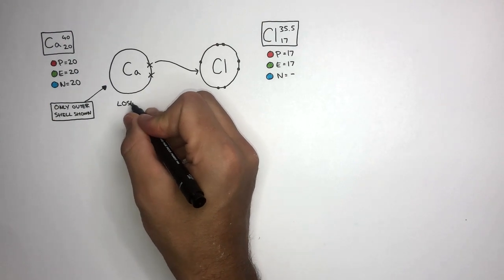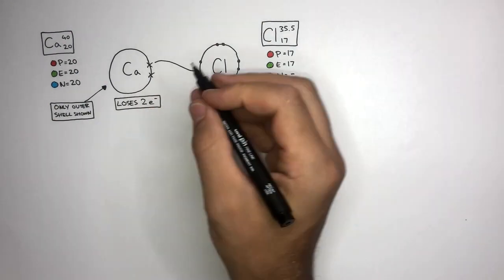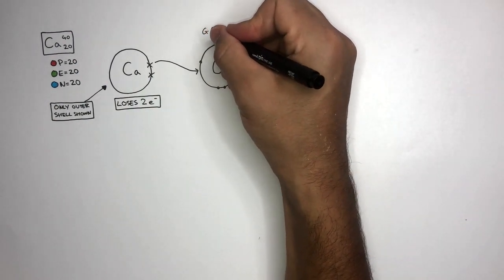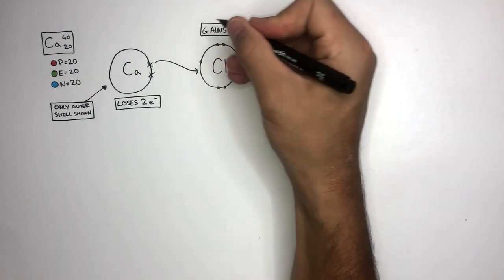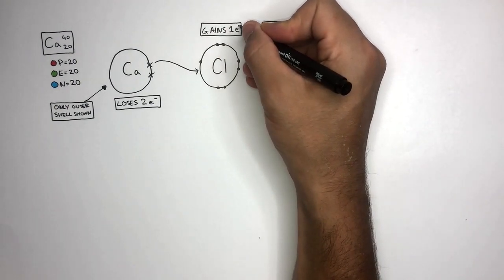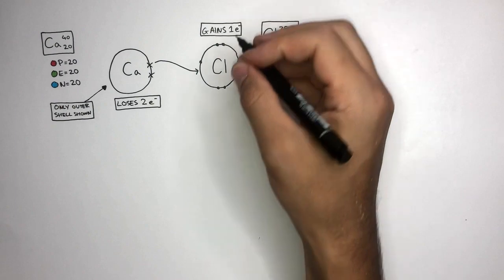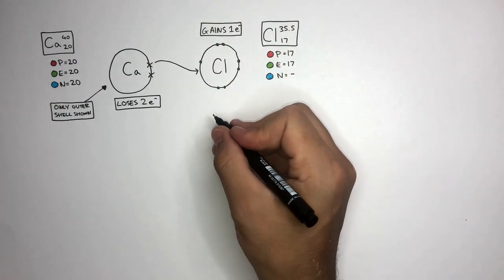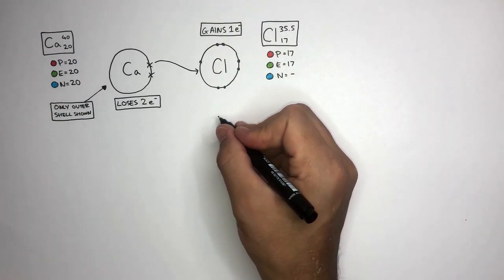So the Calcium atom loses two electrons, and the Chlorine atom gains one of these electrons. Now the problem is, there's a spare electron. Therefore, when Calcium reacts with Chlorine, Calcium actually reacts with two Chlorine atoms.